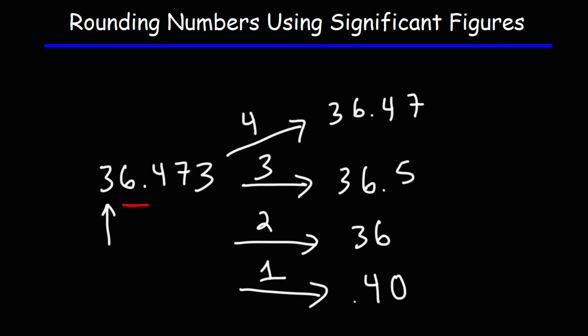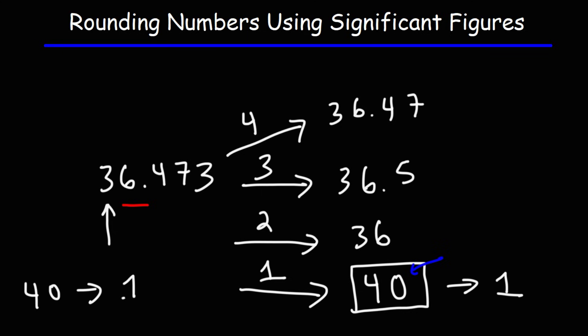Now, 40 doesn't have two significant figures — it has one significant figure. A zero that exists to the right of a significant figure like 4, that doesn't have any decimal point, that zero is not significant. So 40 has one significant figure, but 40 with a decimal point has two significant figures. You can learn these rules in the video entitled 'Significant Figures: A Fast Review,' which you can find in the description section below this video.